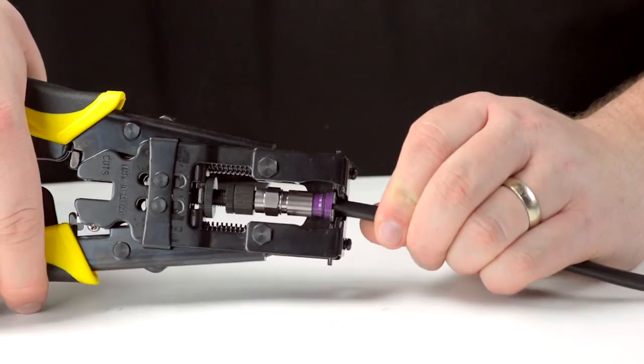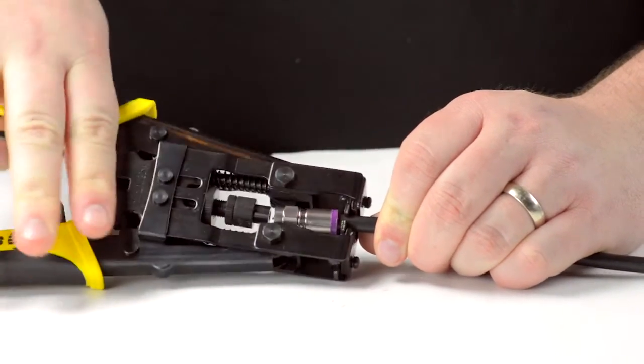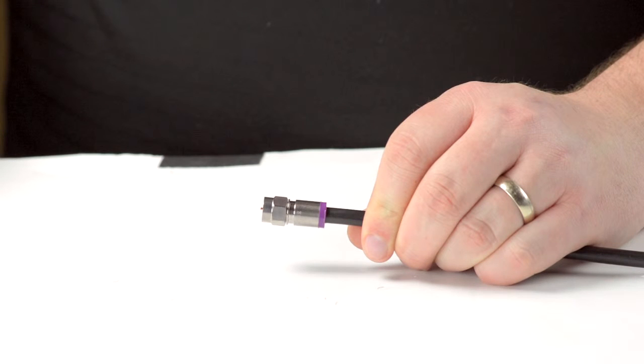Insert the connector into the compression tool and firmly squeeze in order to make termination. This will compress the connector, securing it to the cable jacket.